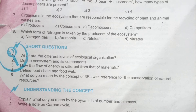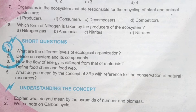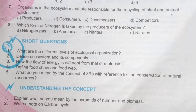Next, short questions. First question is: what are the different levels of ecological organization? The answer is on page number 113 — levels of ecological organization: species, population, community level, biosphere level, and ecosystem. Question number two: define ecosystem and its components. The definition of ecosystem is a self-sufficient unit; two components are abiotic and biotic components.